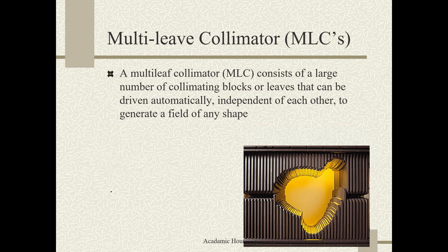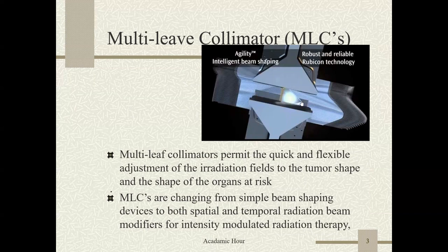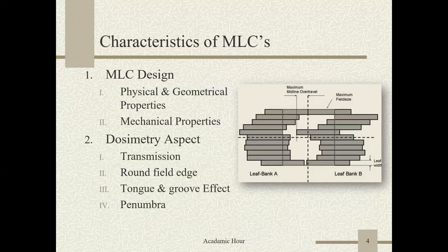The multi-leaf collimator consists of a large number of collimating blocks or leaves that can be driven automatically independent of each other to generate a field of any shape. It permits the quick and flexible adjustment of the irradiation field of the tumor shape and the shape of the organ at risk. MLCs are changing from simple beam shaping devices to both spatial and temporal radiation beam modifiers for intensity modulation radiation therapy.